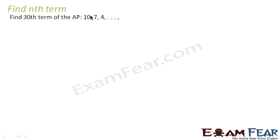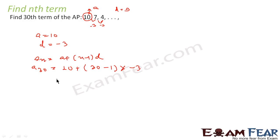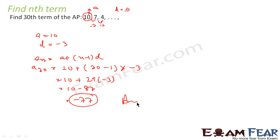Let's take one more example: find the 30th term of an AP. Looking at the AP, a = 10 and d = -3. Using the formula: a_30 = a + (30-1)d = 10 + 29 × (-3) = 10 - 87 = -77. So the 30th term of this AP is -77.